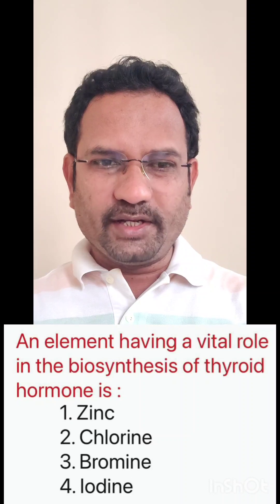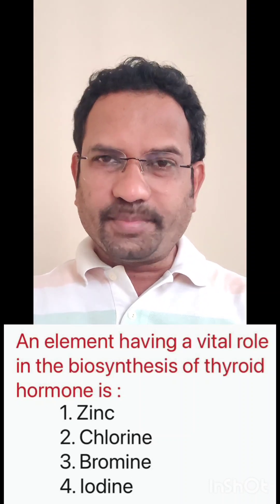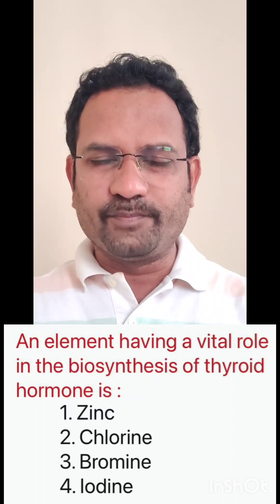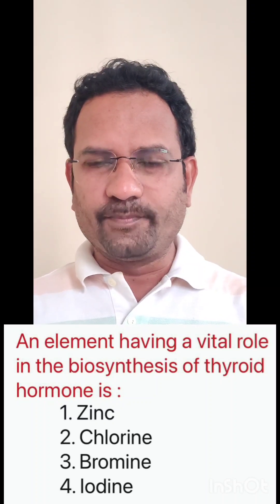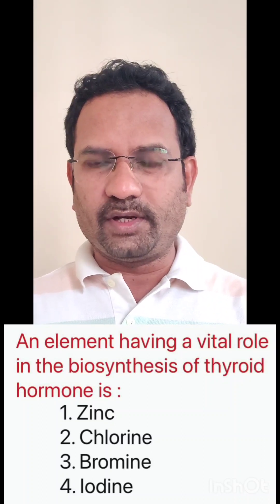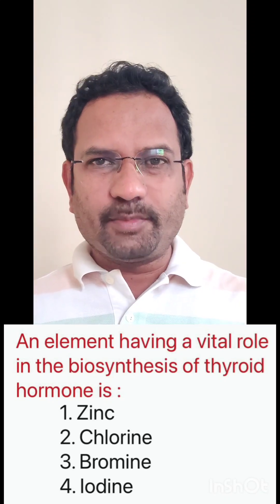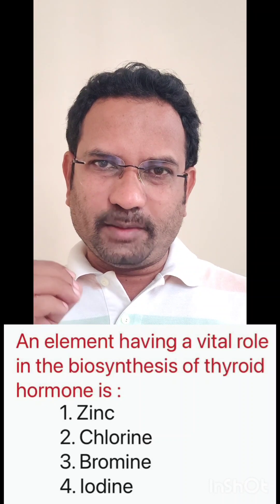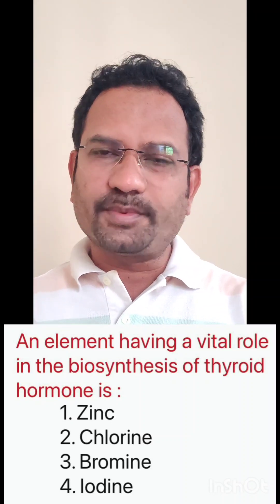The first question is: an element having a vital role in the biosynthesis of thyroid hormone is? Options given are: option 1 zinc, option 2 chlorine, option 3 bromine, option 4 iodine. In the human body, we have two thyroid hormones — T3 and T4. T3 stands for triiodothyronine, T4 stands for tetraiodothyronine, also known as thyroxine. The 3 and 4 indicate the number of elemental iodine atoms present in that hormone. So the important element in thyroid hormone is iodine, and the answer is option number 4.